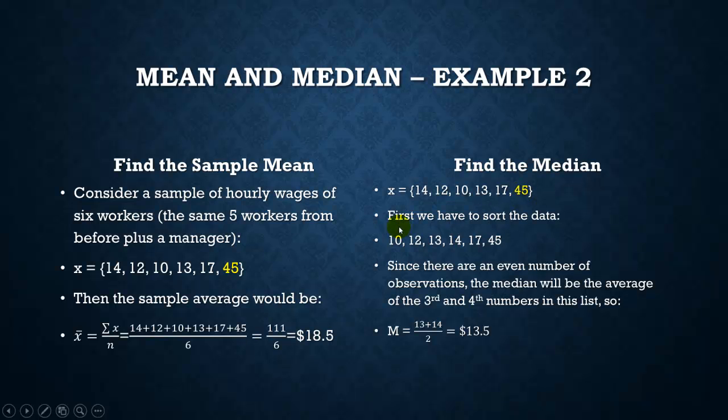Now, related to the median, first we have to sort our data just like we did before. Now the two middle numbers, our two middle numbers are 13 and 14. So let's average those two middle numbers, 13 and 14, divide it by 2, add them up, divide it by 2, and we get $13.50. That's pretty close to what it was before, and this seems to be a little more descriptive of our sample.